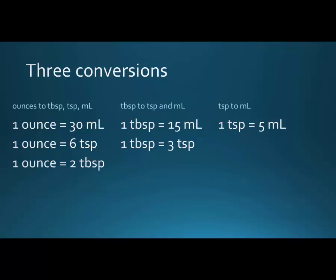What I recommend is that you memorize the top lines: one ounce is 30 mLs, one tablespoonful is 15 mLs, and one teaspoon is 5 mLs. That keeps everything equal to one common factor — the mL. All of the other conversions can be derived if you know these three, because you always have mL to mL to mL.